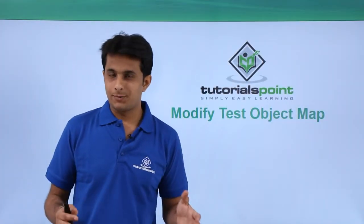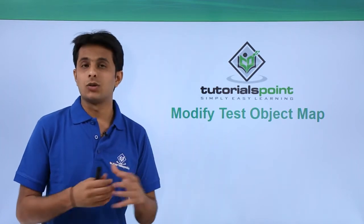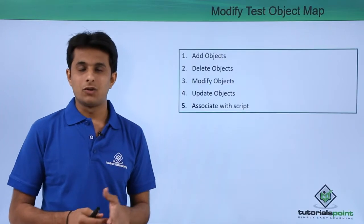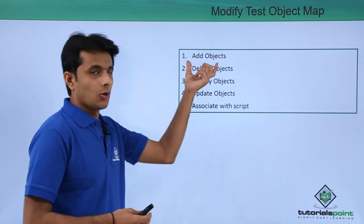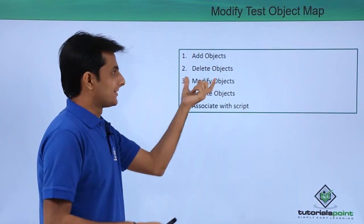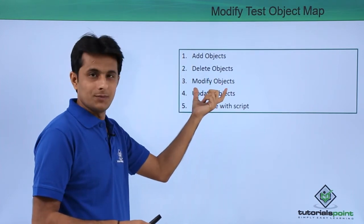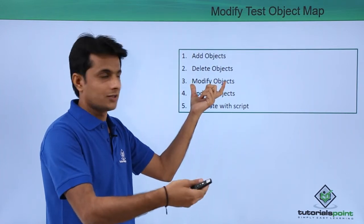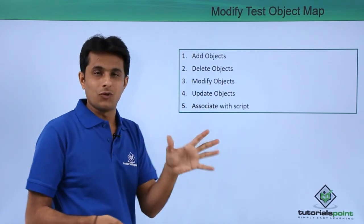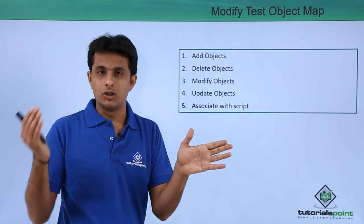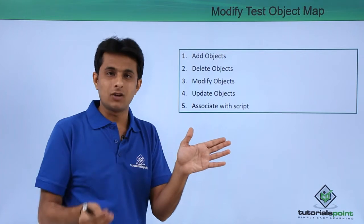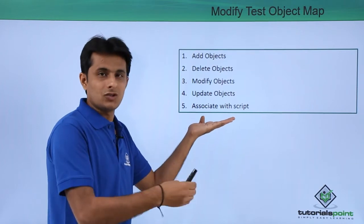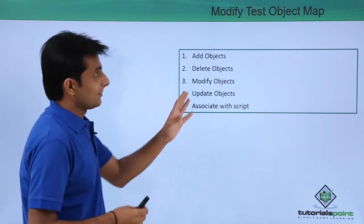After working on the test object map, we've seen how to create, share, and associate it. Now we'll look at how to modify the test object map. We'll see how to add objects, delete objects, modify objects — including modifying properties and values, increasing or decreasing weightage, and updating objects when a developer provides a new build. Finally, we'll see how to associate the test object map with a particular script.